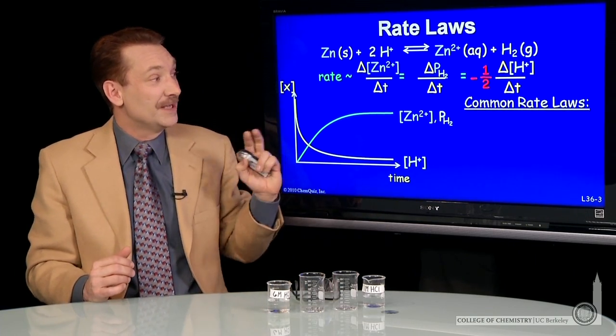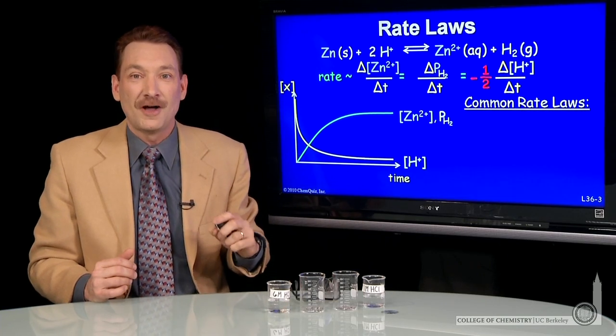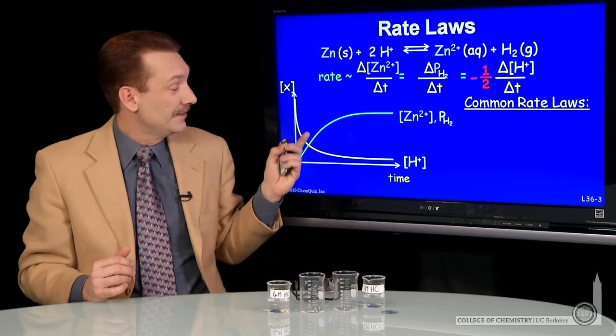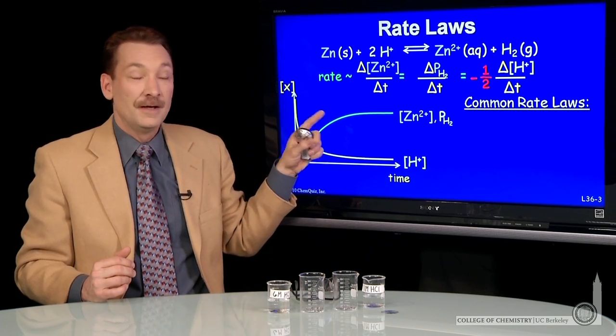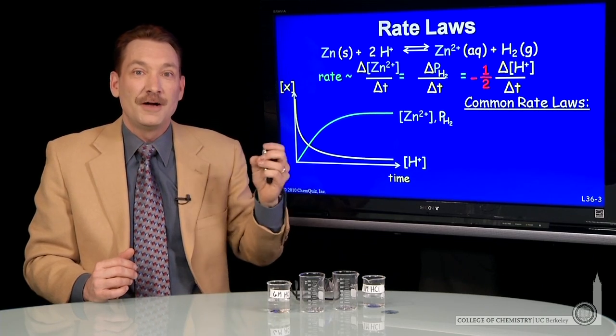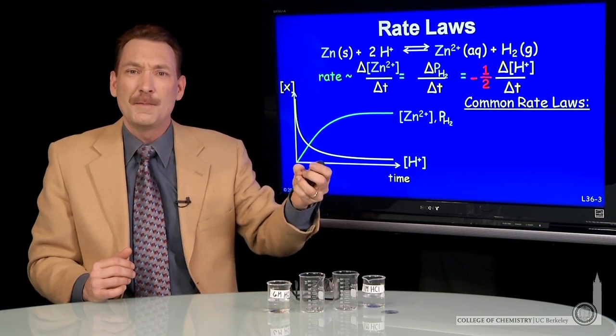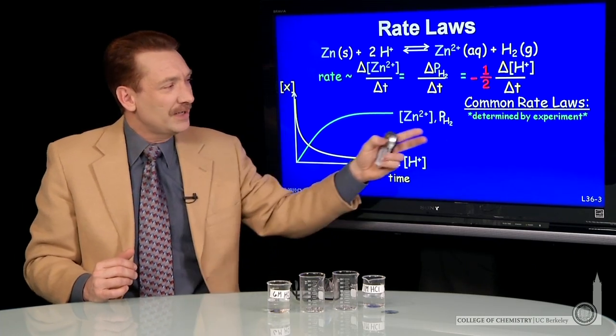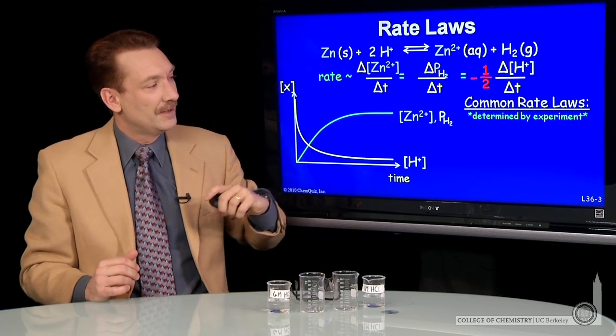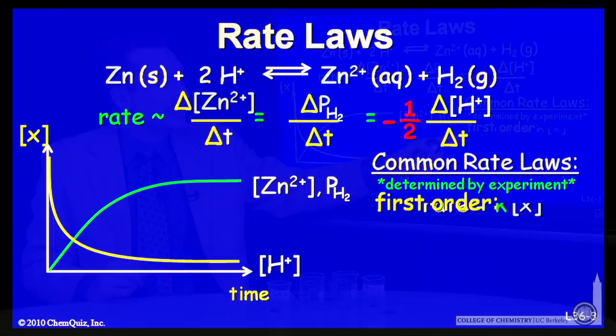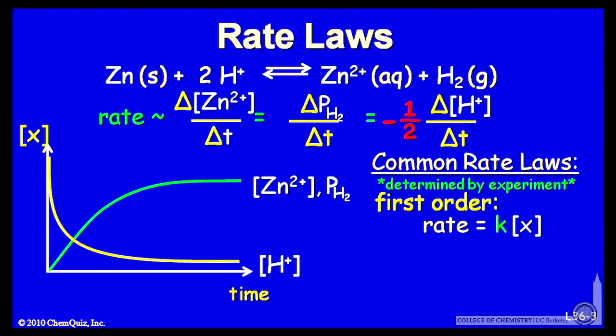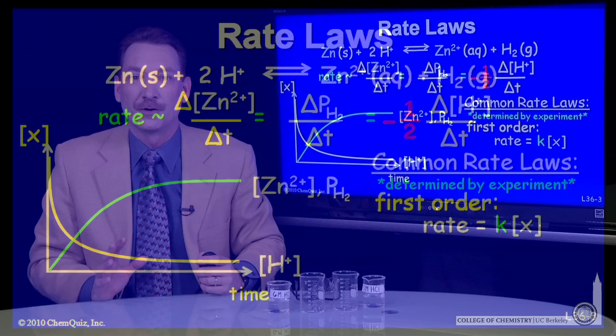But in general, what we do is we write down common rate laws. The rates, as we measure them, are proportional to the concentrations in some sense. And one common way they're determined is the rate is proportional to the first order, that is the concentration to the first power, a linear relationship between the rate and the concentration of a product or a reactant.